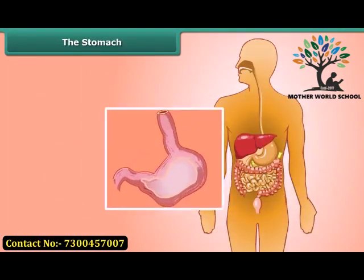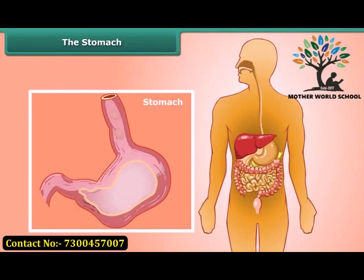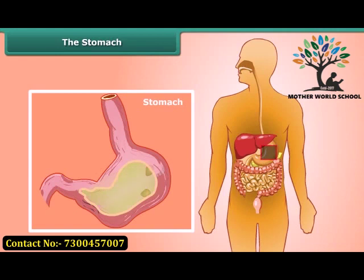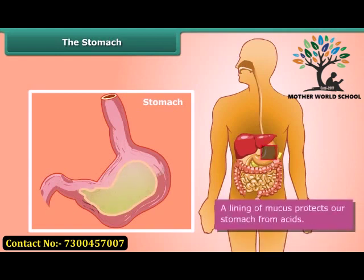The stomach is the widest part of the alimentary canal. It is a thick-walled bag with a flattened U-shape. Inside the stomach, food is churned and mixed with digestive juices including hydrochloric acid. These chemicals break down the proteins into simpler substances. A lining of mucus protects our stomach from the acids.